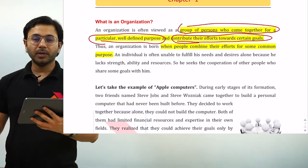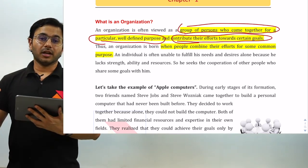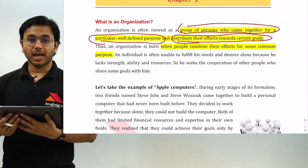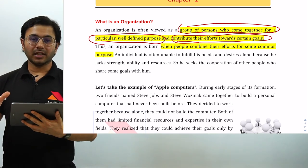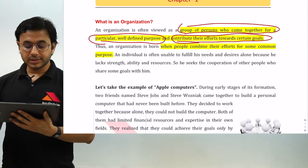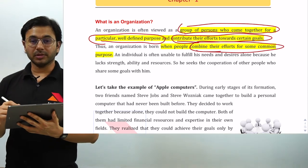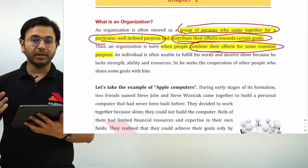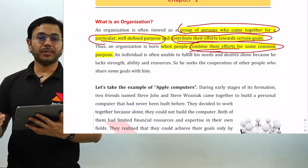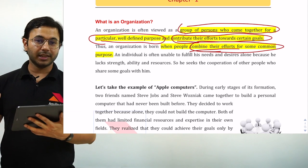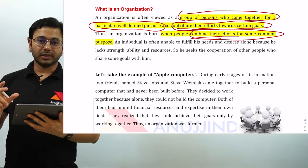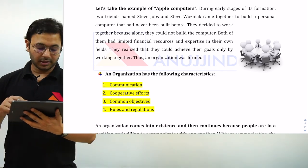Steve Jobs and Steve Wozniak, two people coming together, decided to create computers which can be given to people at their homes and which are not limited to industrial uses. In order to achieve these goals, they were ready to dedicate their lives, time, and effort. Therefore, an organization is born when people combine their efforts for some common purpose — here being developing home-based computers. Steve Jobs being the marketing expert and Steve Wozniak being the tech guy — this is what an organization is and how it is born.